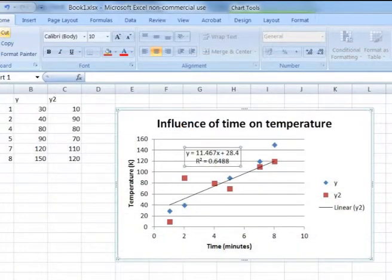As you now can see, Excel has added a trendline to our red data points, and it has added the equation to our graph, as well as R squared, the correlation coefficient to our graph.